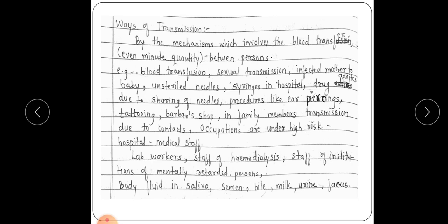The routes of transmission include: blood transfusions, sexual transmission, transmission from infected mothers to babies, unsterile needles and syringes used in hospitals, sharing of needles among drug-addicted people, ear piercing, tattooing, and barber shops. Household contact and occupational exposure — such as hospital and medical staff — are also routes of transmission.